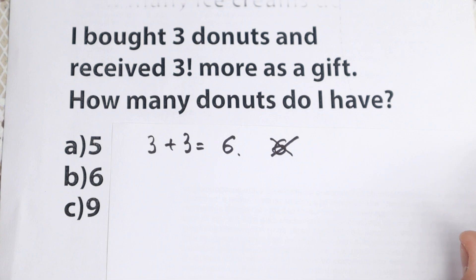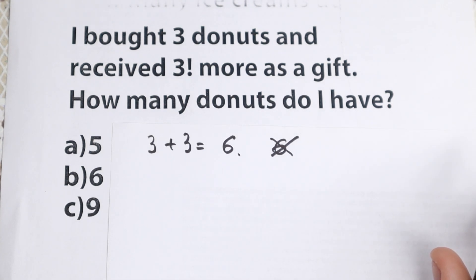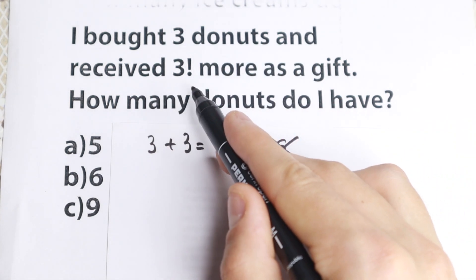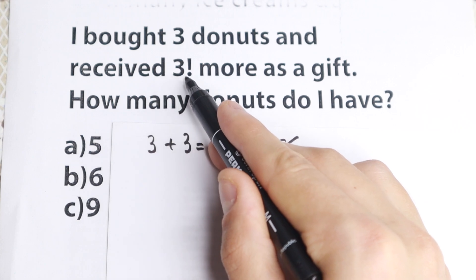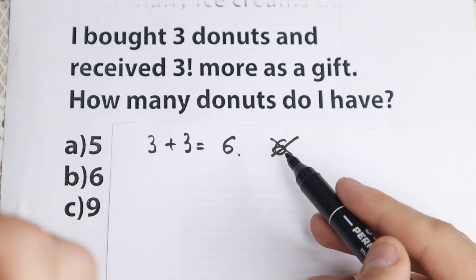If you know a little bit about math you can easily see one really interesting moment. A lot of students don't pay attention to this sign, but if we read it once more and look step by step we can see that three has one really interesting sign right here. We have this sign and in math this sign means factorial.